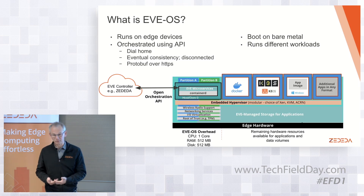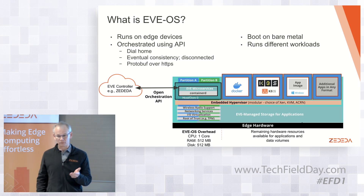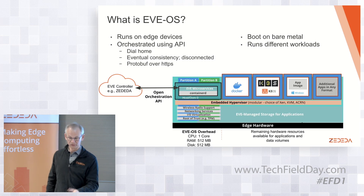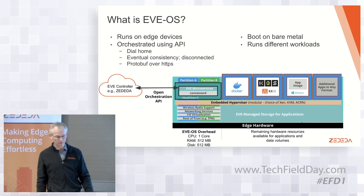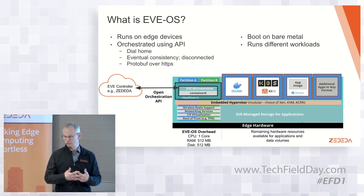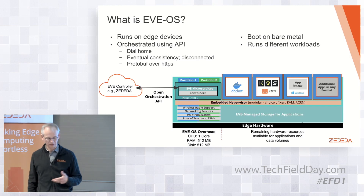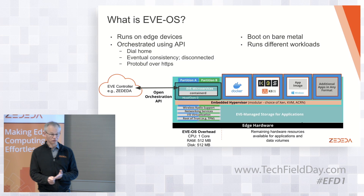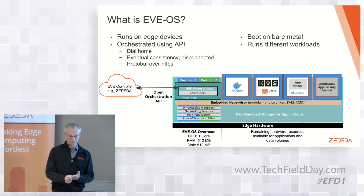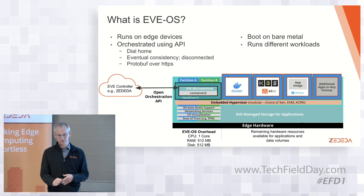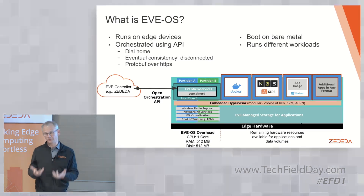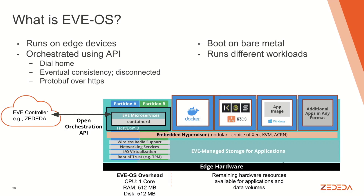There is an actual implementation that runs on bare metal. It's built using Linux packages and runs different workloads, fundamentally serving that API. This picture tries to depict that it has dual partitions for redundancy in terms of updating EvoOS itself and the various parts of the system. It runs a set of microservices, has hypervisors inside that you can plug in different ones. It supports Wi-Fi, LTE, and other networking, IO virtualization, as well as a TPM chip, so you can have a hardware root of trust in the system.